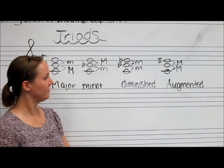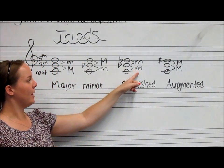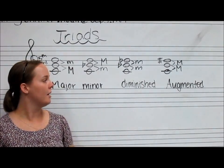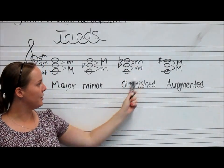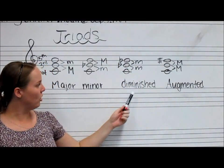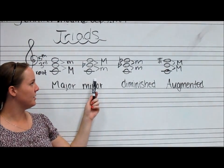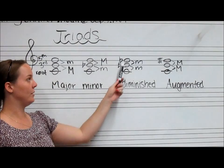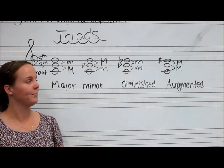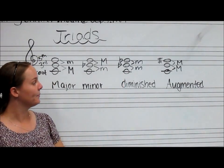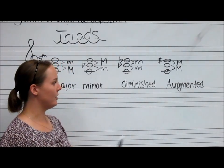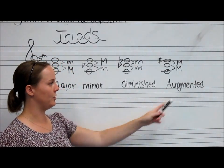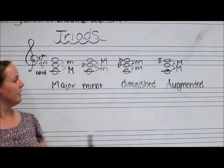If you have a minor third and another minor third, that's going to make a diminished triad. It's almost like your minor triad, except now instead of just the middle note — the third — being lowered, we're also going to lower the top note, the fifth, and that will make it sound diminished.